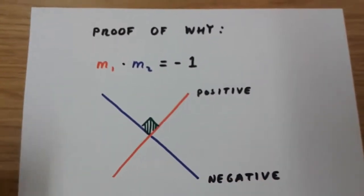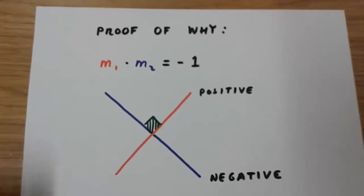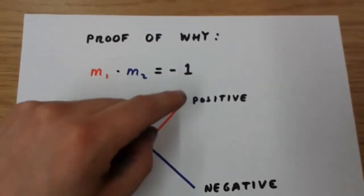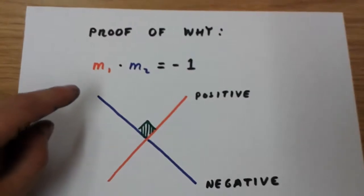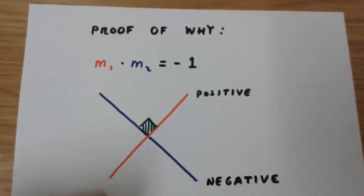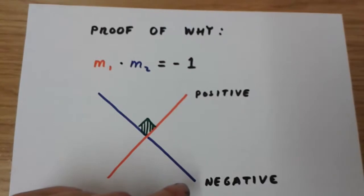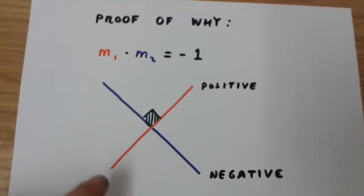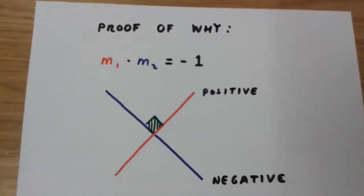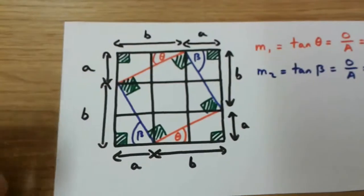Now, what is a gradient? A gradient is actually a slope. Slopes can be positive and slopes can be negative. So this slope here is going to have a negative value, and this slope here, in red, is going to have a positive value.